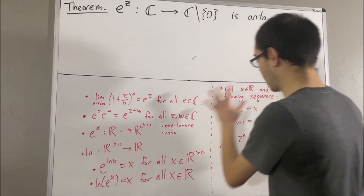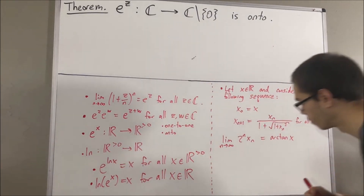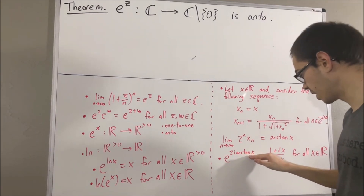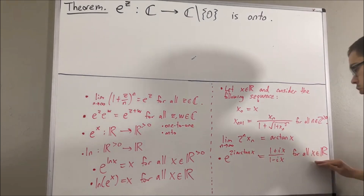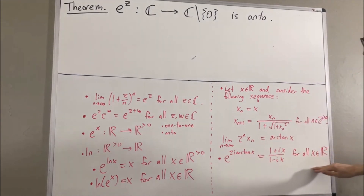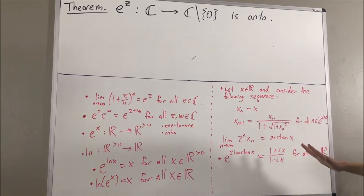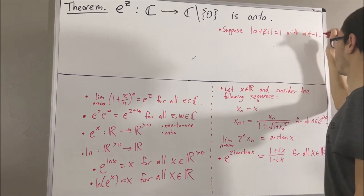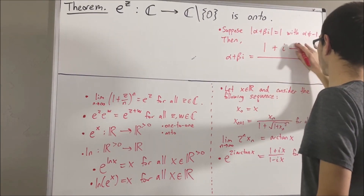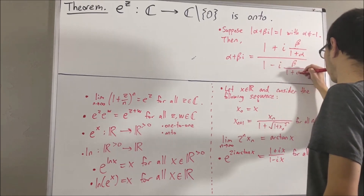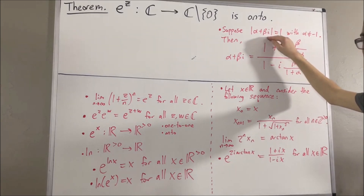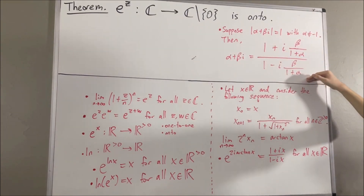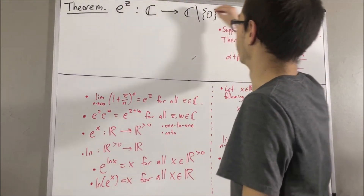Combining the exponential function and the arctangent function, we proved the following property: e^{2i·arctan(x)} equals (1 + ix)/(1 - ix) for all real numbers x. The way we proved this used the following fact about complex numbers: suppose alpha + beta·i is a complex number of magnitude 1 whose real part is not equal to -1. Then alpha + beta·i can be expressed in a specific form.